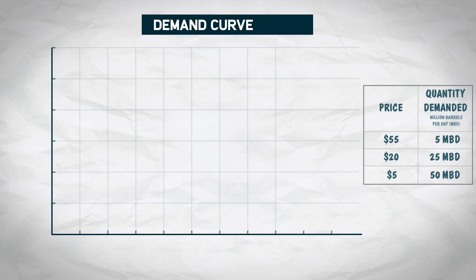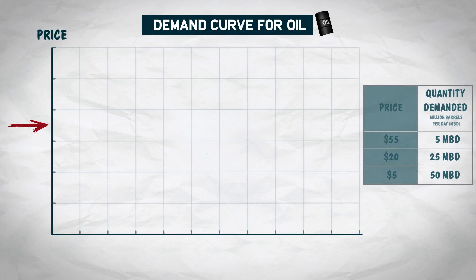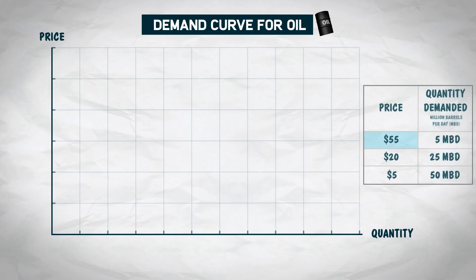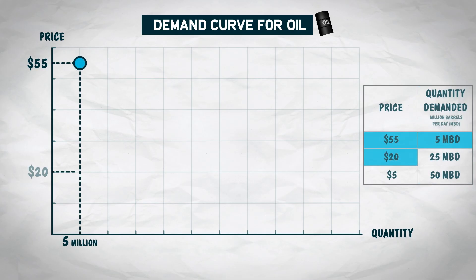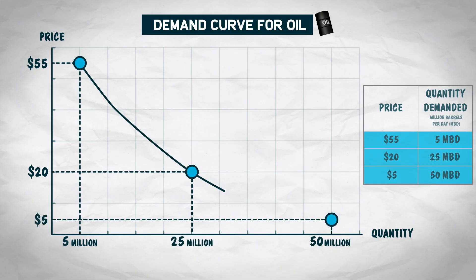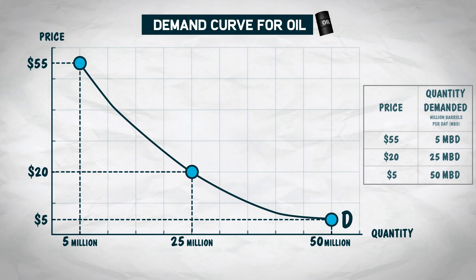Let's convert these into a graph with the price of oil on the vertical axis and the quantity of oil demanded on the horizontal axis. We can now graph our three points and connect them with a line. That's the demand curve for oil — it shows us the quantity demanded at each price.